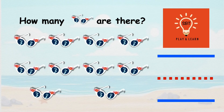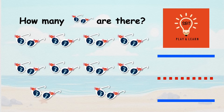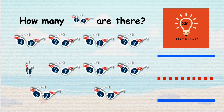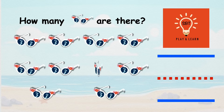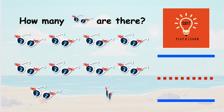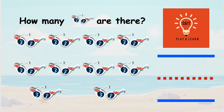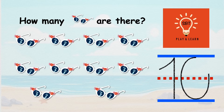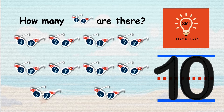How many sunglasses are there? Ready? Count! 1, 2, 3, 4, 5, 6, 7, 8, 9, 10. There are 10 sunglasses. Let's write number 10. Make a street lamp, and then a ball — Number 10.